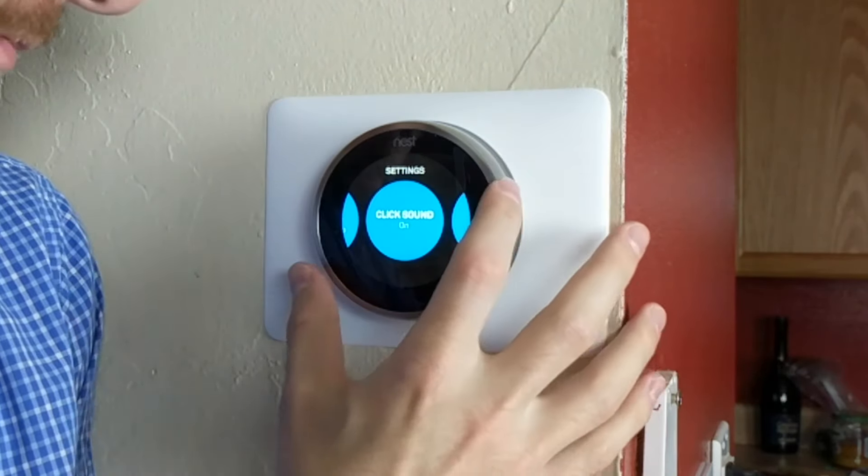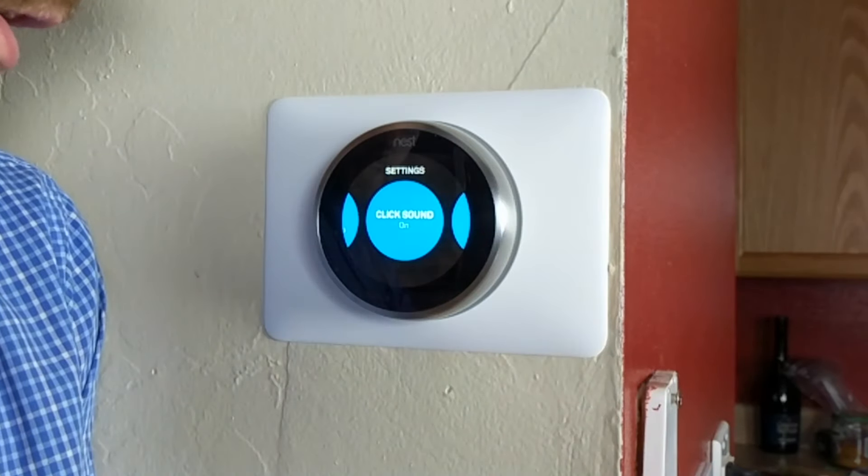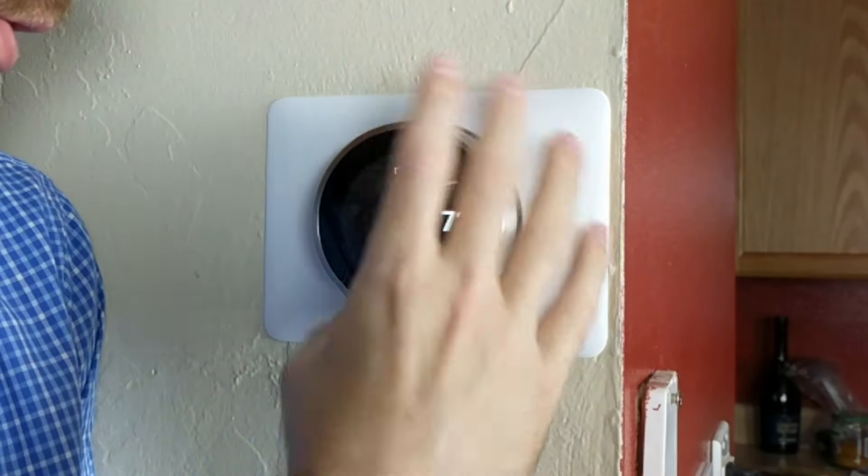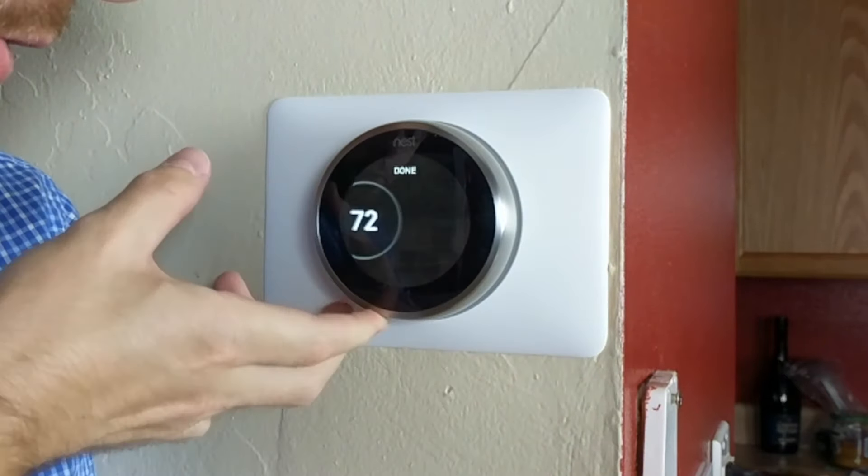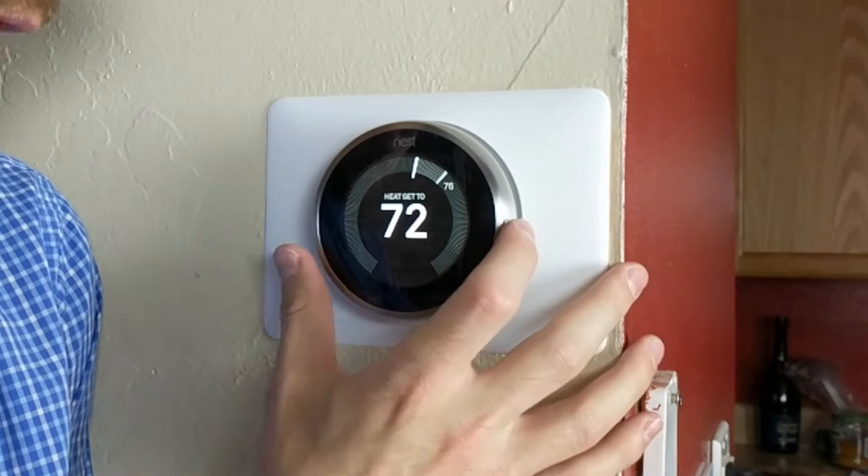And you have a bunch of other settings like changing if the click sound is on or off and so on. Now to exit the settings menu, that's pretty easy to do. Just scroll all the way to the left or all the way to the right, press in and you're back to your main home screen.